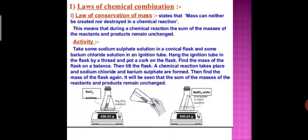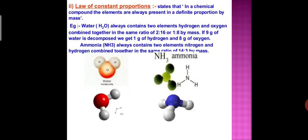At the end of the 18th century, Lavoisier, a French chemist, laid the foundation of modern chemistry by formulating two important laws of chemical combination. There are two laws of chemical combination: first is the Law of Conservation of Mass, and second is the Law of Constant Proportion.